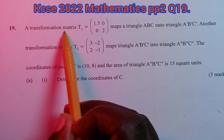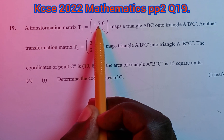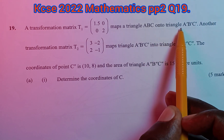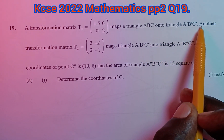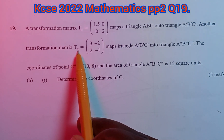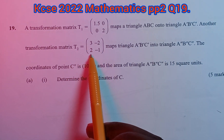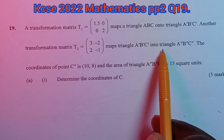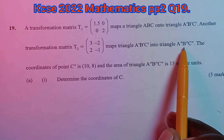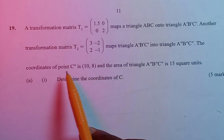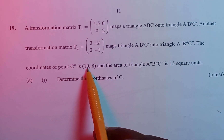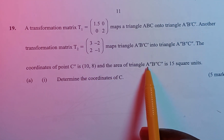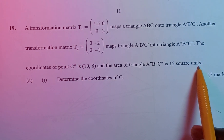The question reads: a transformation matrix T1 with coordinates (1.5, 0, 0, 2) maps a triangle ABC onto triangle A'B'C'. We also have another transformation T2 with coordinates (3, -2, 2, -1), mapping triangle A'B'C' onto triangle A''B''C''. The coordinates of point C'' are (10, 8), and the area of A'B'C' is 15 square units.